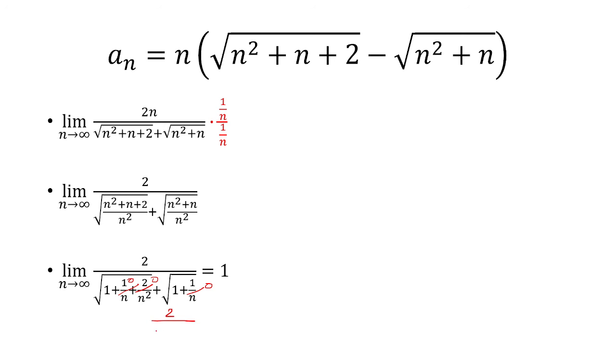So you have 2 over the square root of 1 plus the square root of 1. Well, that's going to be 1 plus 1, which is 2. And so our limit is going to be 1.